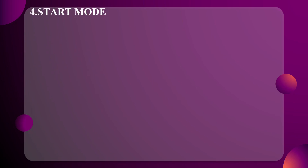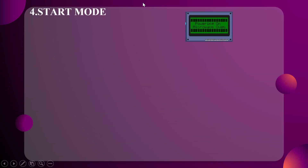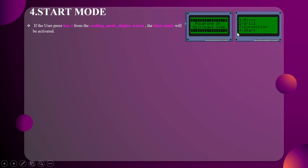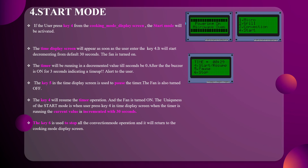Now let's move on to the Start mode. Initially the power-on screen and cooking mode display screen appear. To enter Start mode, press key number 4. The time display screen will appear, but in this mode there is a default of 30 seconds as the time. The fan is turned on and the timer runs in a decremented fashion until it reaches zero.